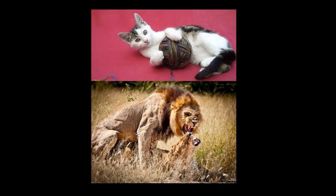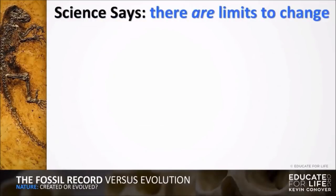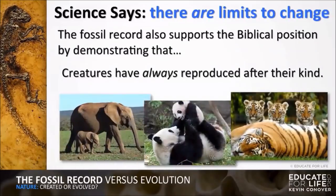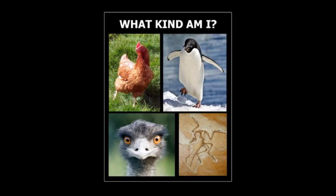Did he just say there's all different types of cat kinds and horse kinds? Doesn't that contradict what they teach that it says in the Bible? Science says there are limits to change and the Bible says there are limits to change. Creatures have always reproduced after their kind. Every species gives birth to the same species, but populations change over time. Now last I knew they had at least 23 different kinds of birds.